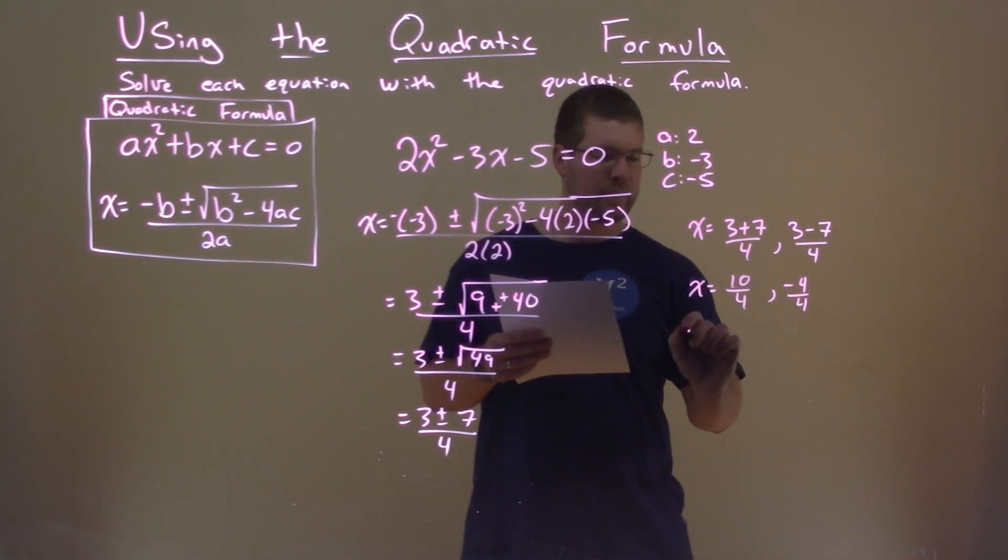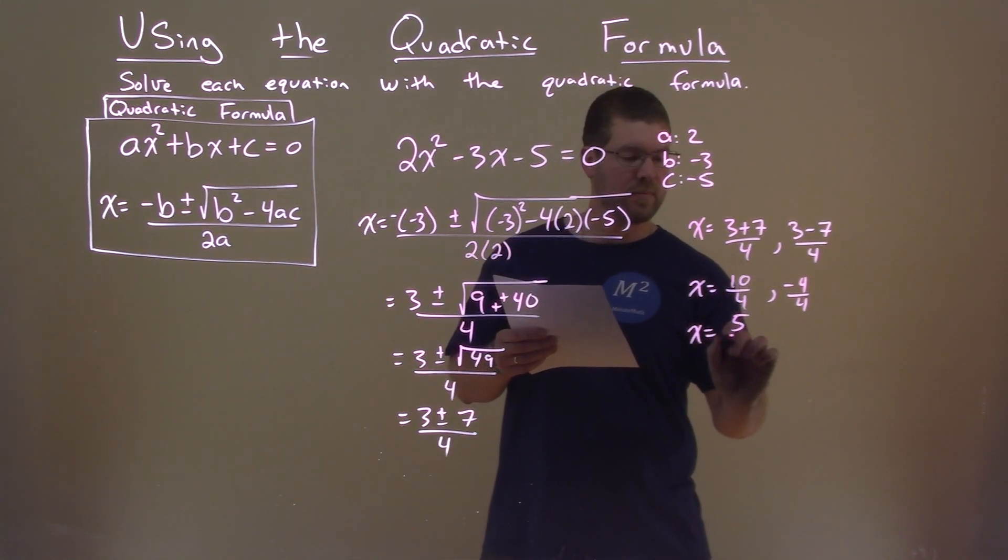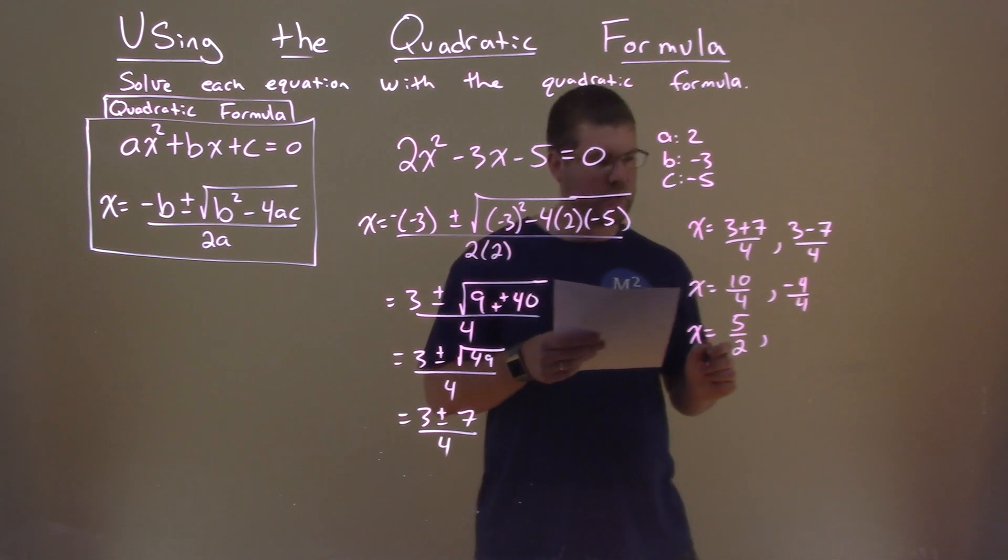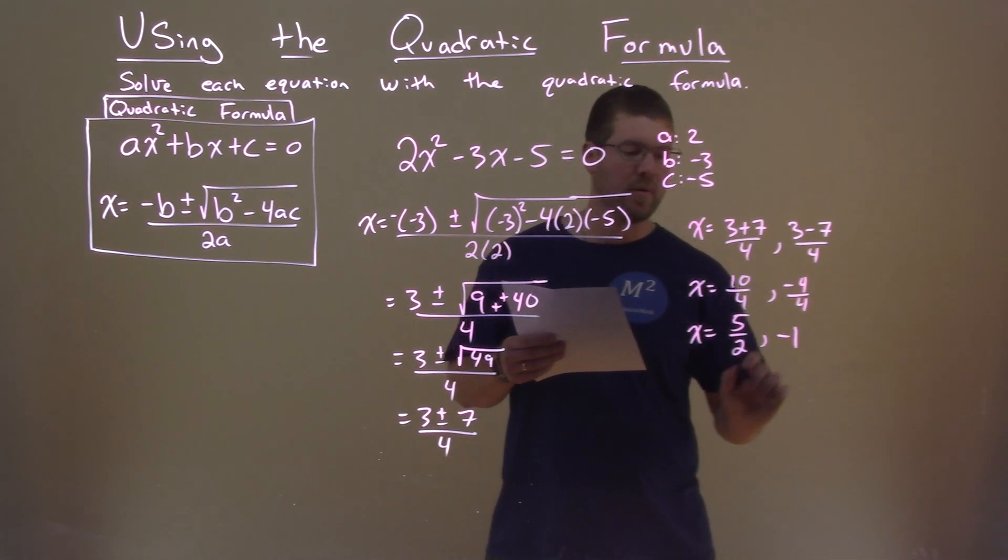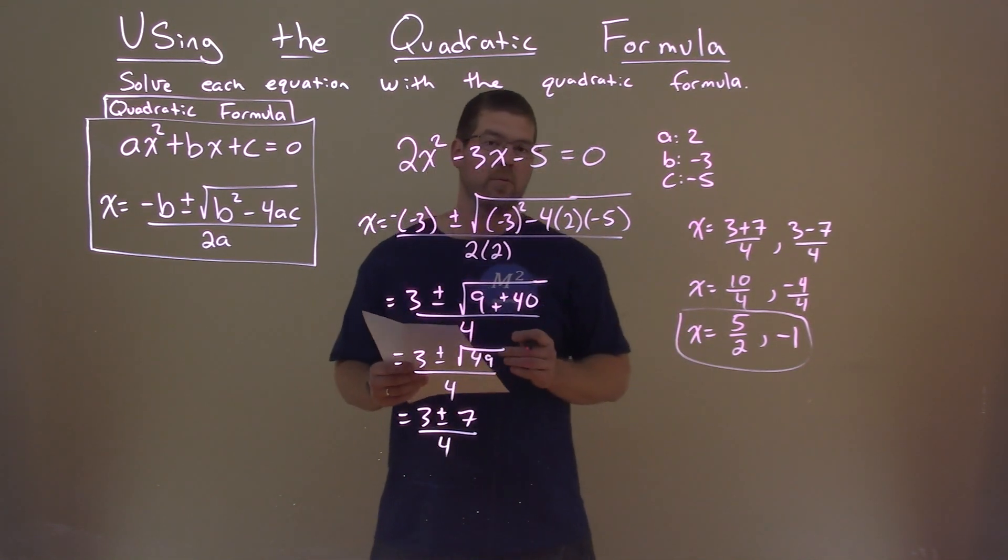Let's simplify that. x equals 10 divided by 4 is 5 halves, and negative 4 divided by 4 is negative 1. And so our final answer here is x equals 5 halves and negative 1.